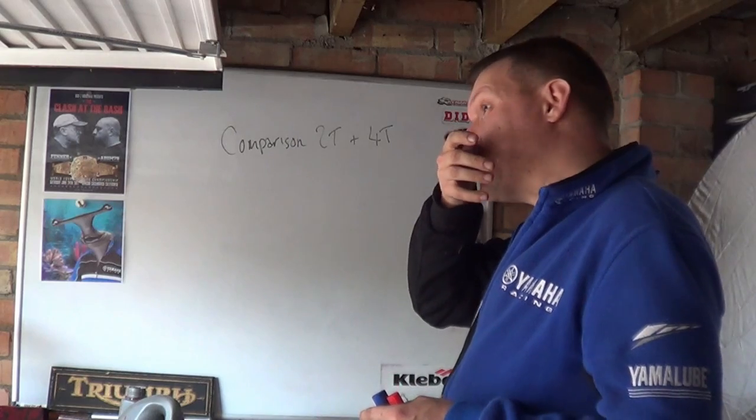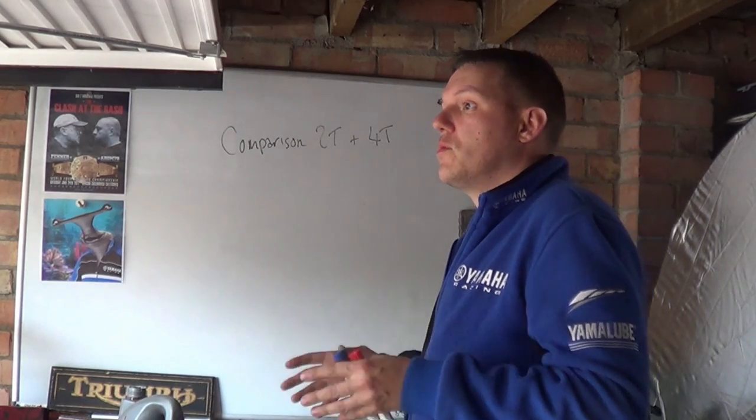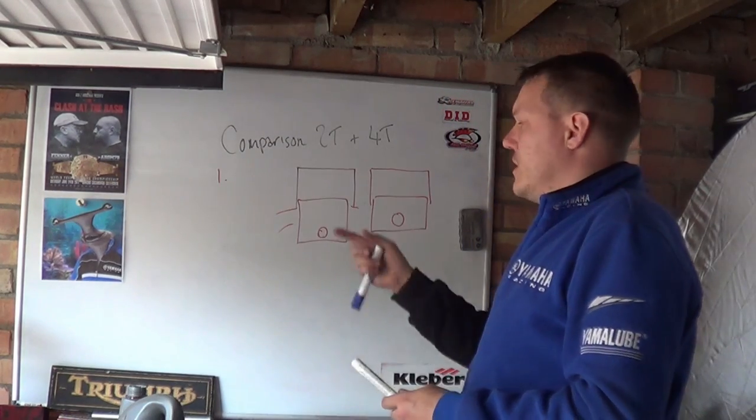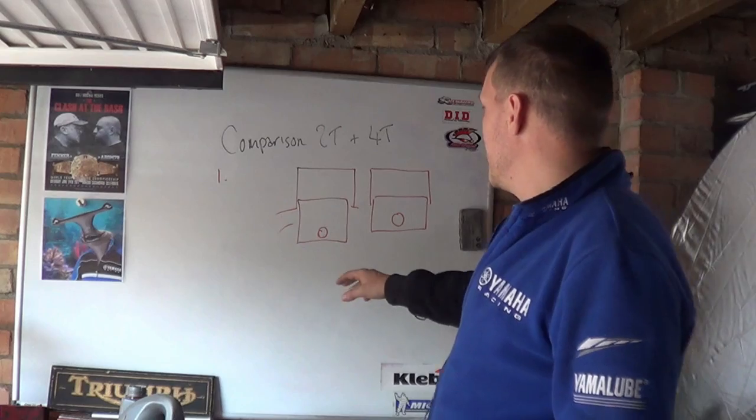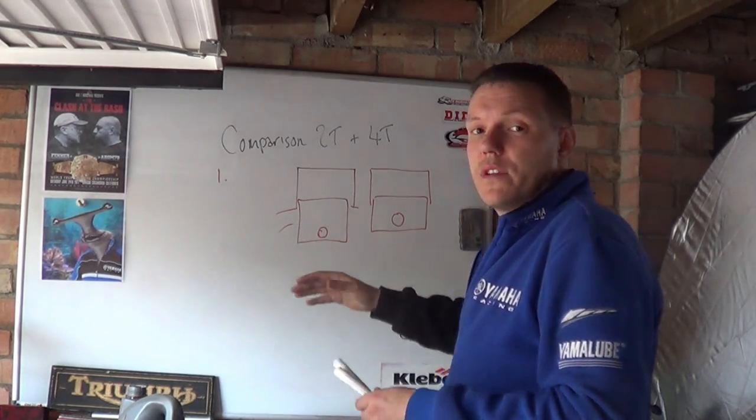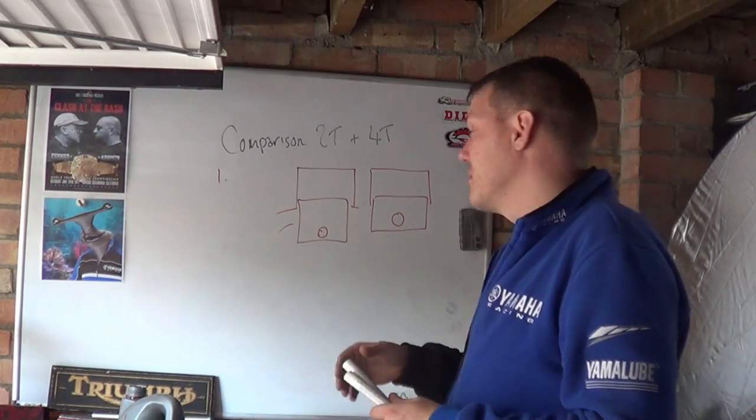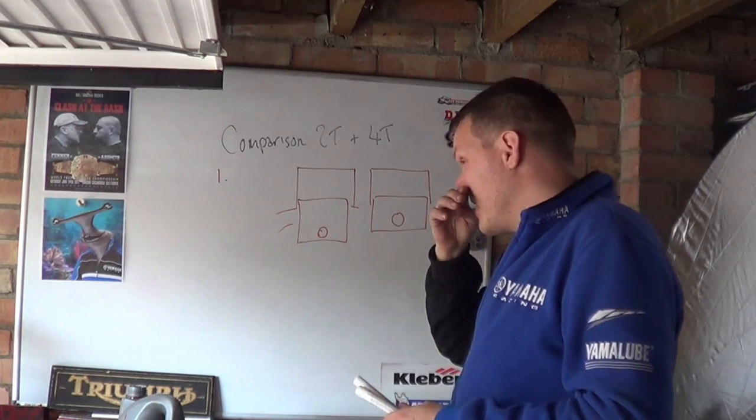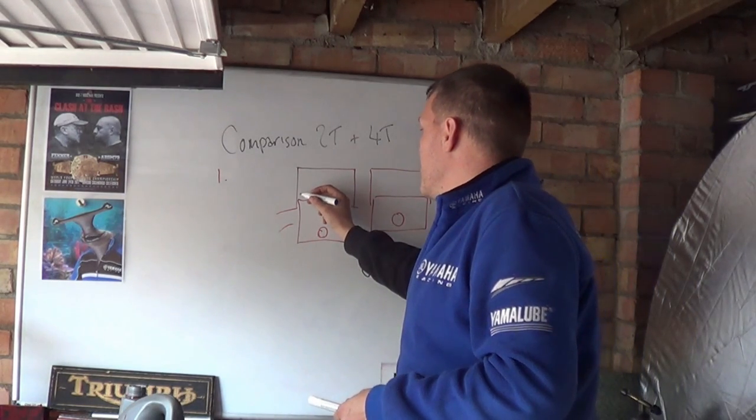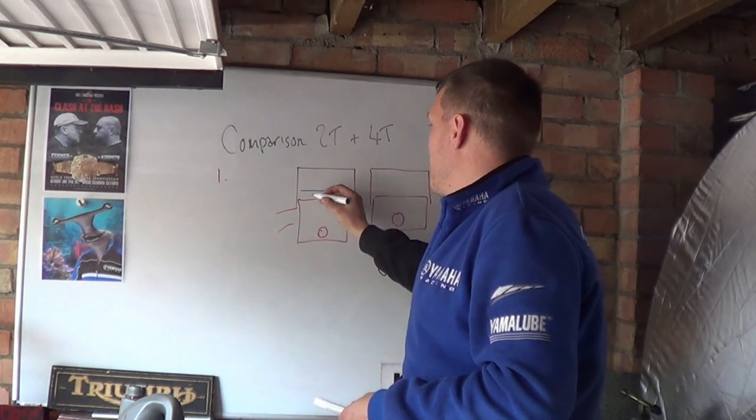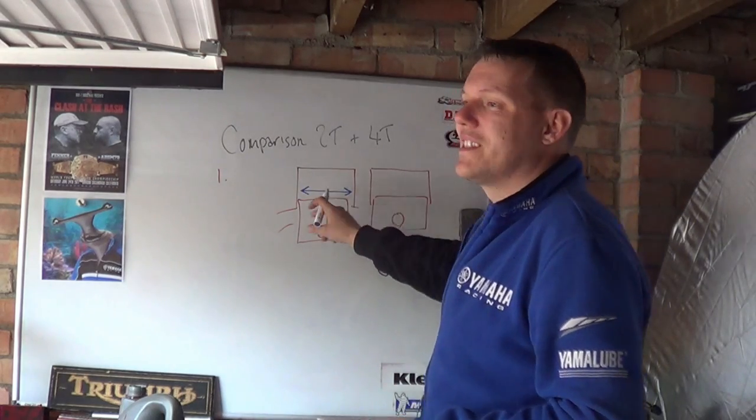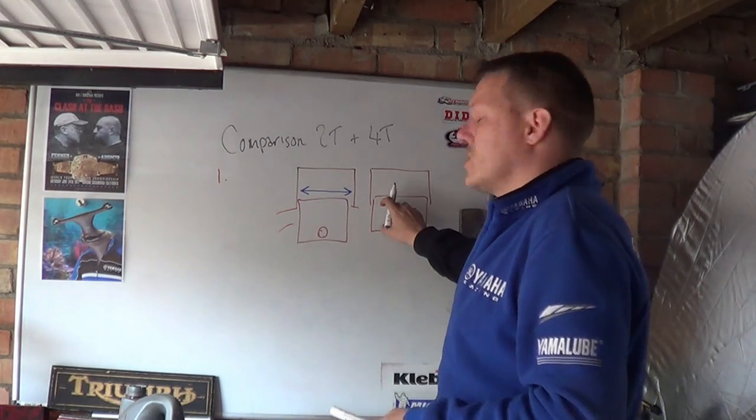Two-strokes do not produce as much torque as four-strokes, and there are reasons behind this. Reason number one: if we look at a comparison between a two-stroke and a four-stroke, generally because two-strokes have to use their side skirts, the actual piston is kind of like a valve as it passes the transfer port and the exhaust port. The stroke to piston diameter is usually a lot smaller than it is for a four-stroke.